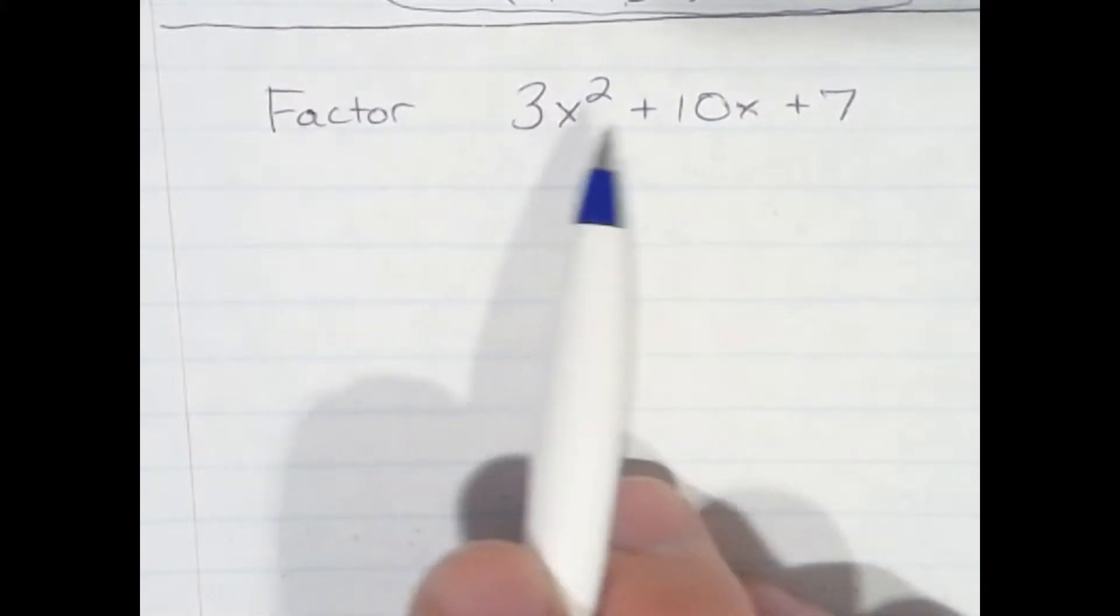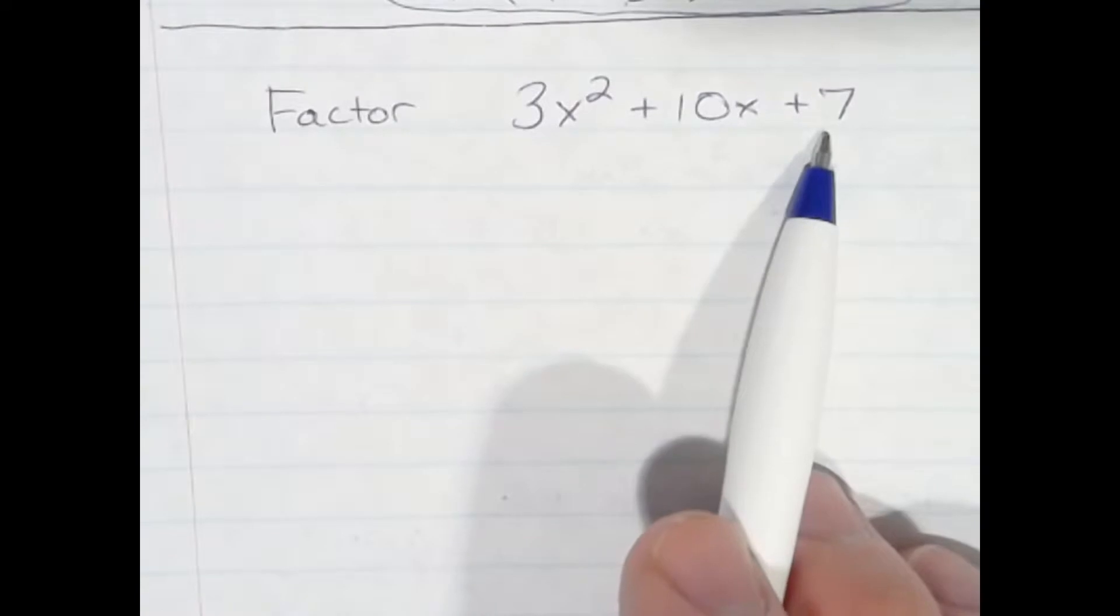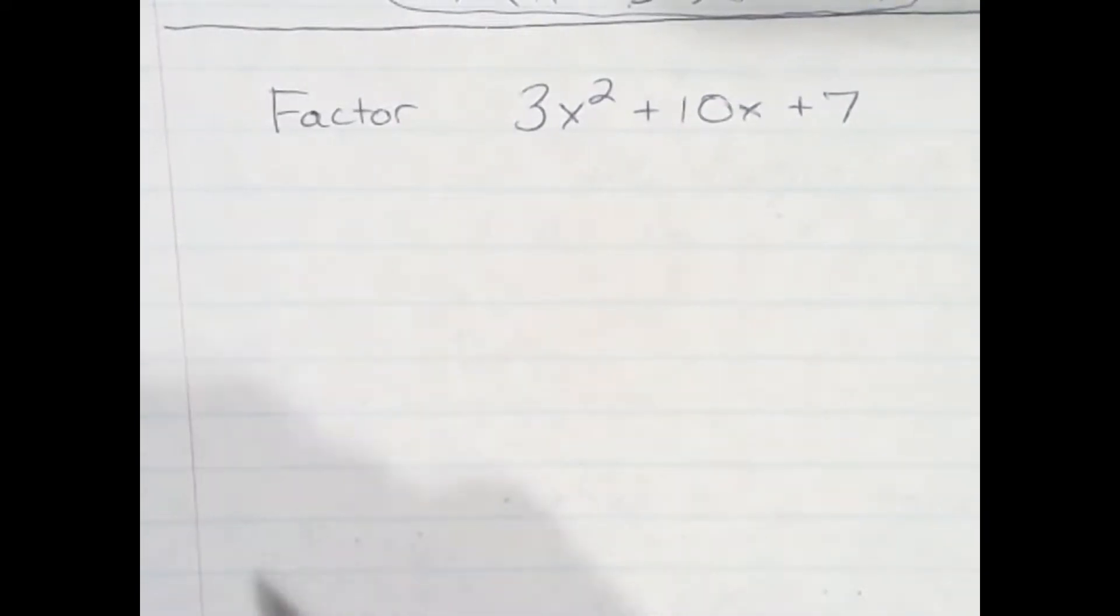This is the A number, 3 is the A number, 10 is the B number, and 7 is the C number, and that's the standard form of a quadratic.